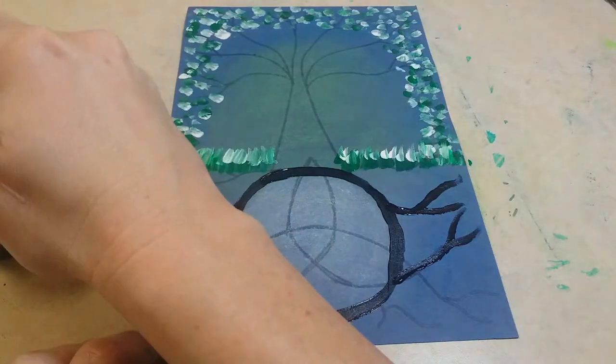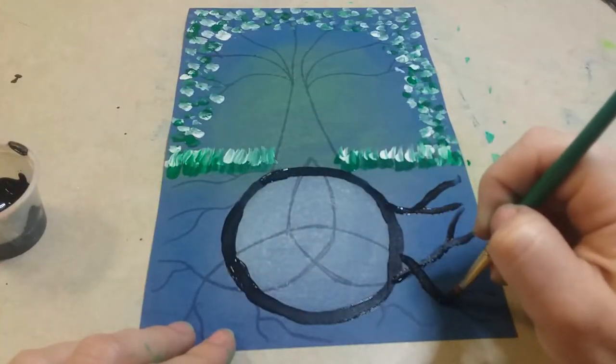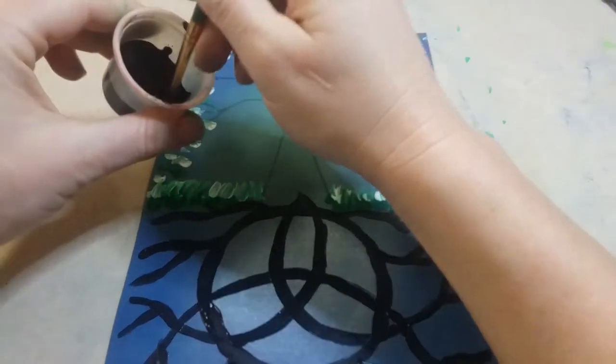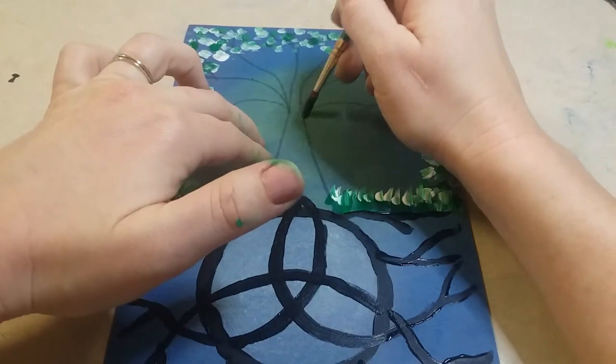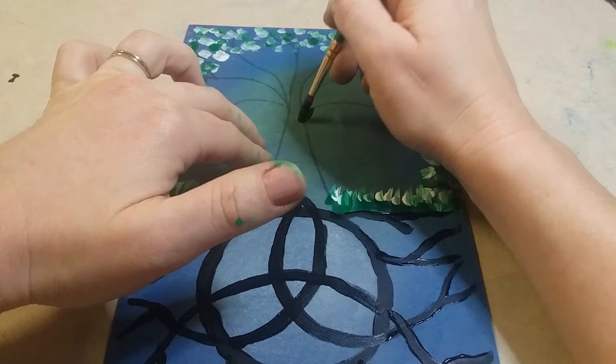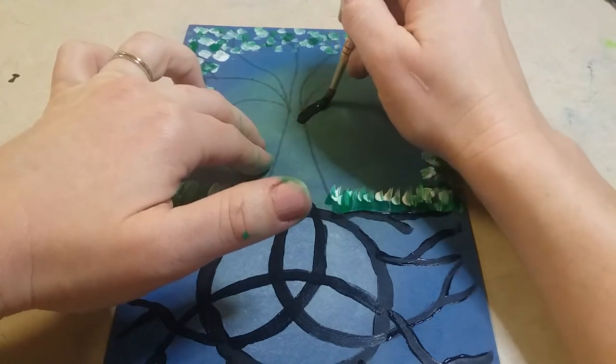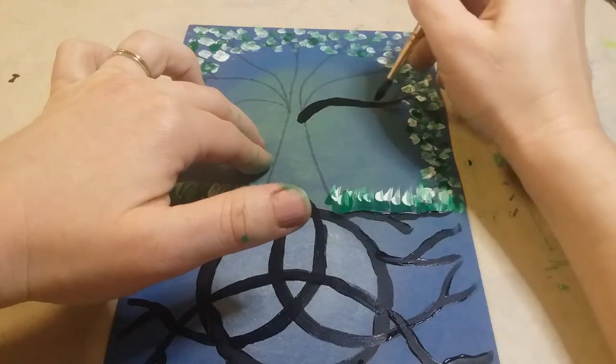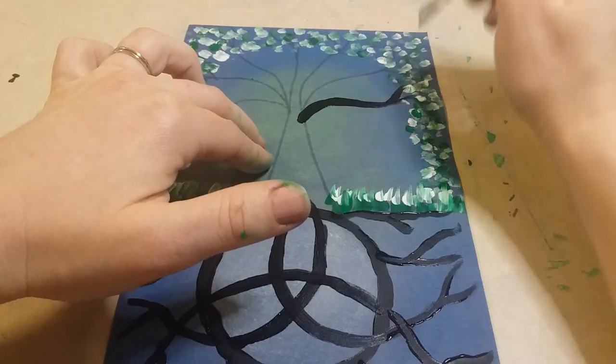Now another trick that you can use when you're adding these branches is when you start here you're starting towards the trunk of the tree and then as you extend out you're gonna lift up on the paintbrush. So I'm barely touching the paper and that's gonna help make those lines a little bit thinner. I press down and then as I get closer I just kind of gently lift up.